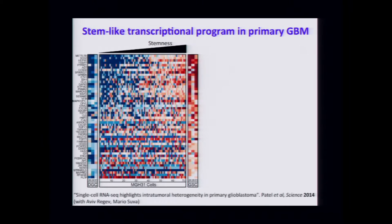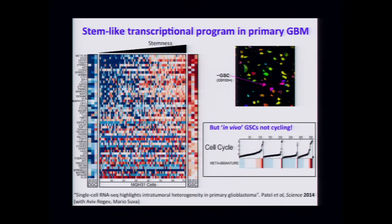But there's a caveat: if you take these cells and ask about their cell cycle signature, it turns out they're not cycling — they're totally dormant and quiescent. So we have a model of CSCs with the right neurodevelopmental programs that seems to emulate something in a tumor, yet our CSCs are proliferating rapidly. The real in vivo GSCs with this developmental program seem to be out of cycle and quiescent and dormant. This presents a challenge as we think about modeling and targeting.